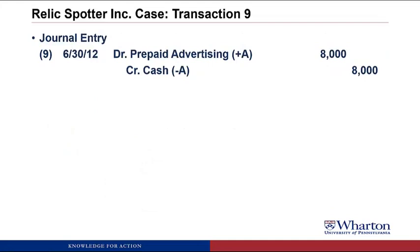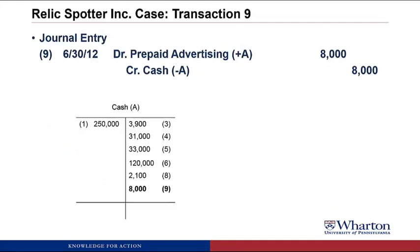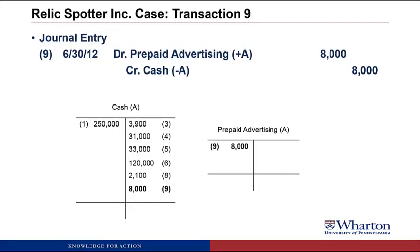We post this transaction to T-accounts. There's another credit to cash on the right-hand side, and we create a T-account for prepaid advertising with a debit of $8,000.